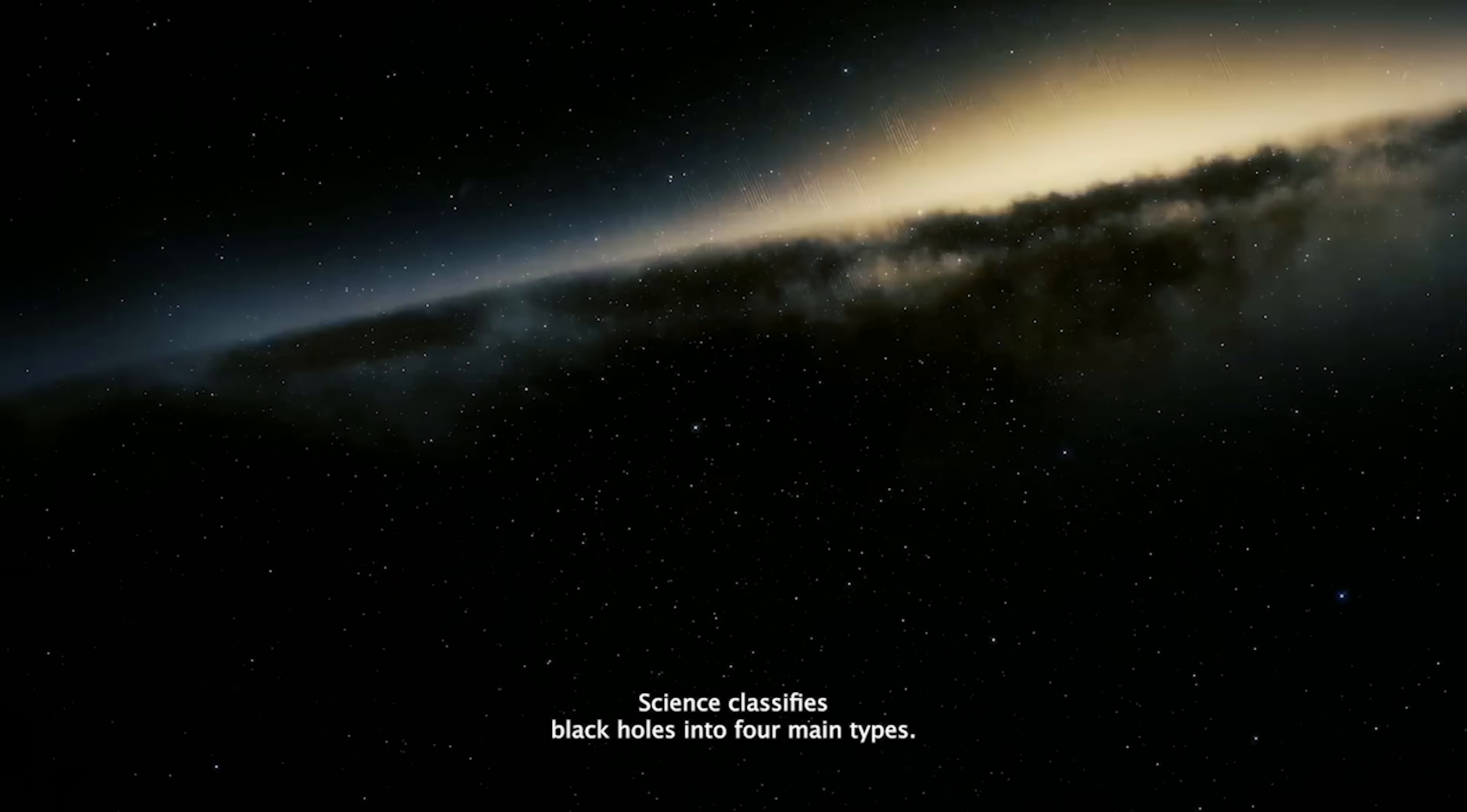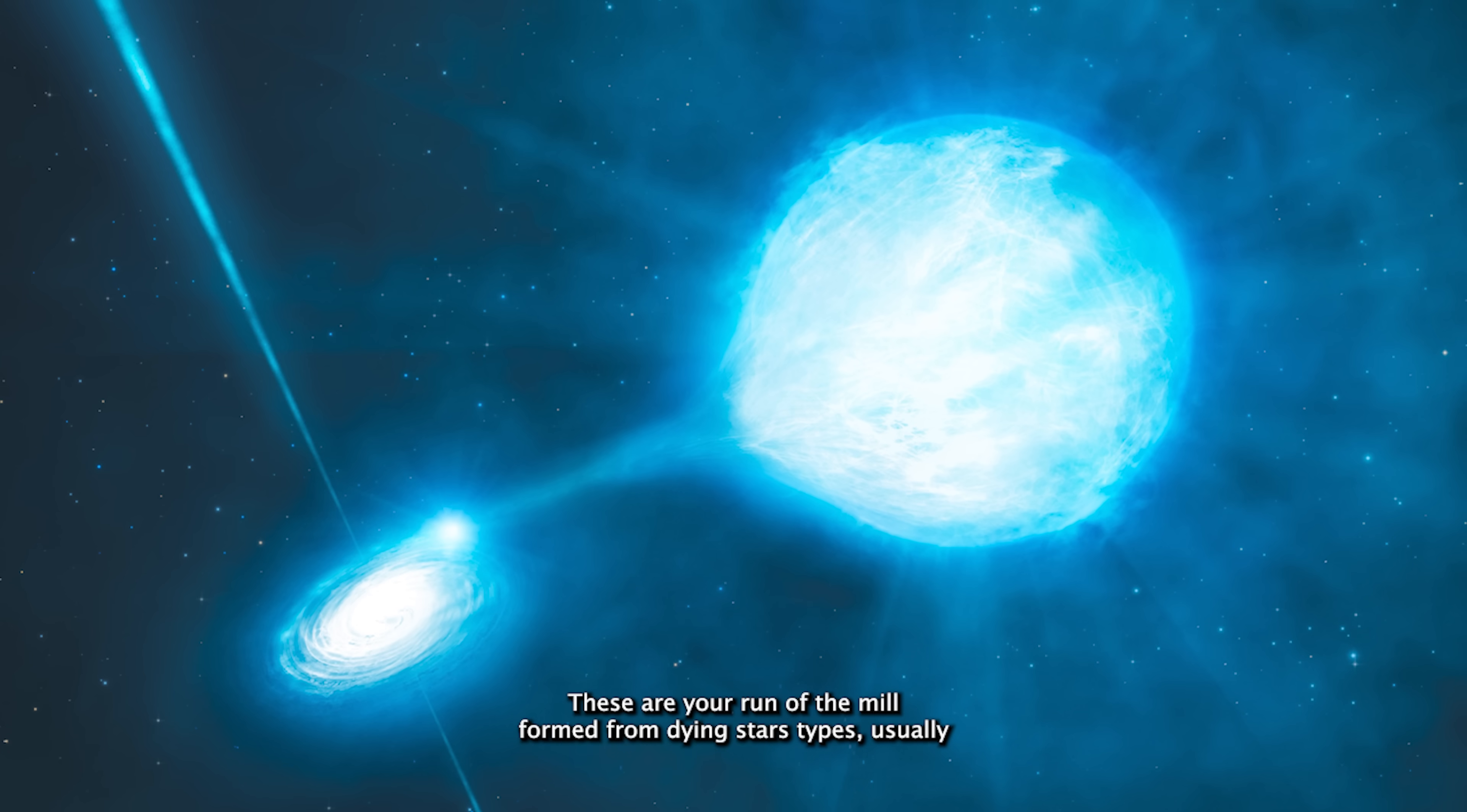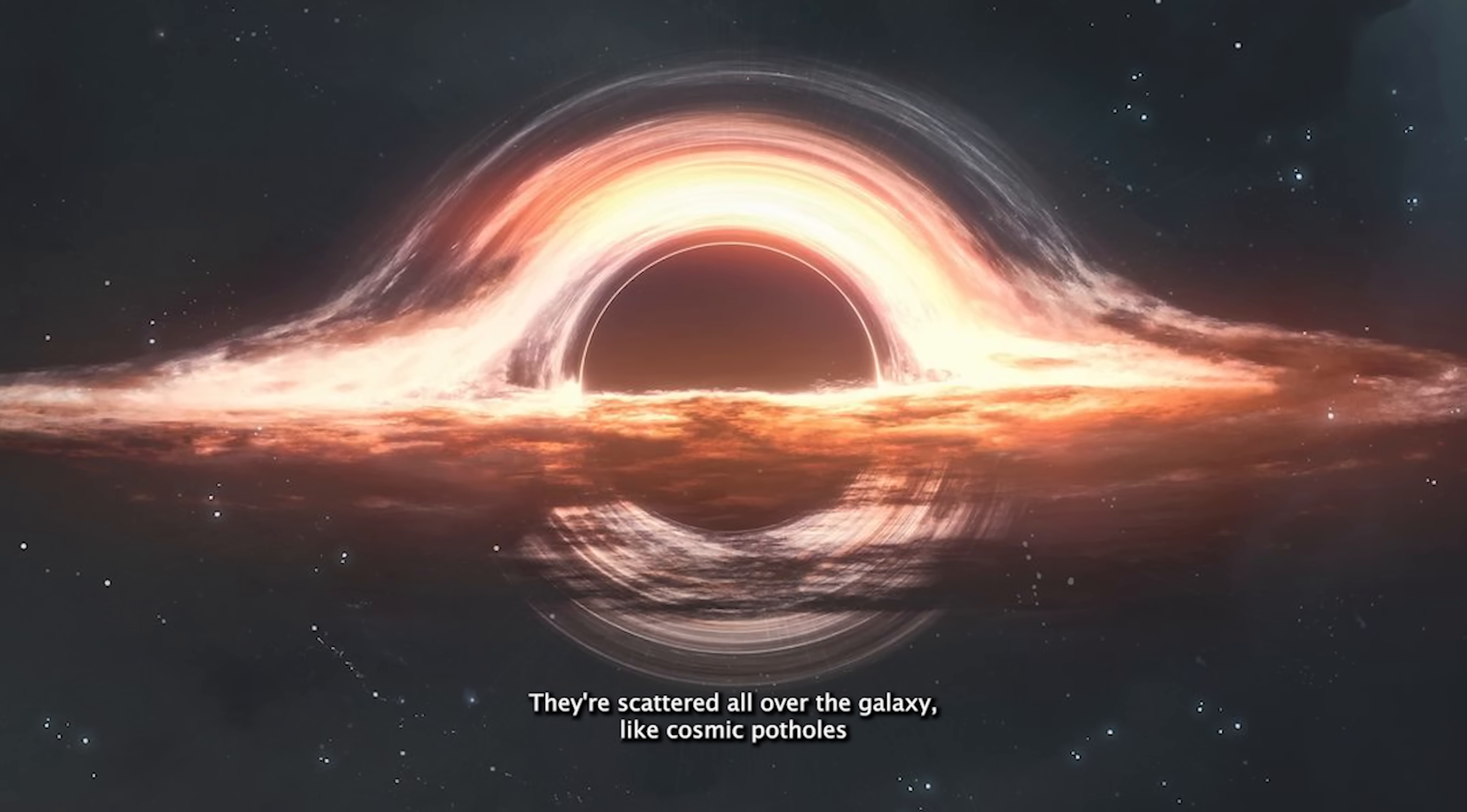Right now, science classifies black holes into four main types. Stellar black holes. These are your run-of-the-mill, formed from dying stars types, usually between three and a hundred solar masses. They're scattered all over the galaxy like cosmic potholes.